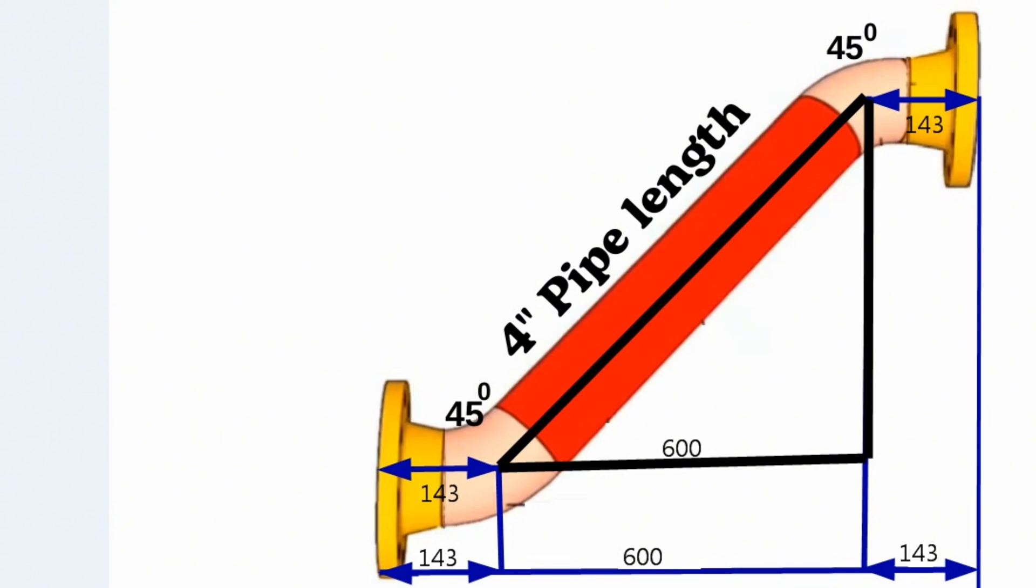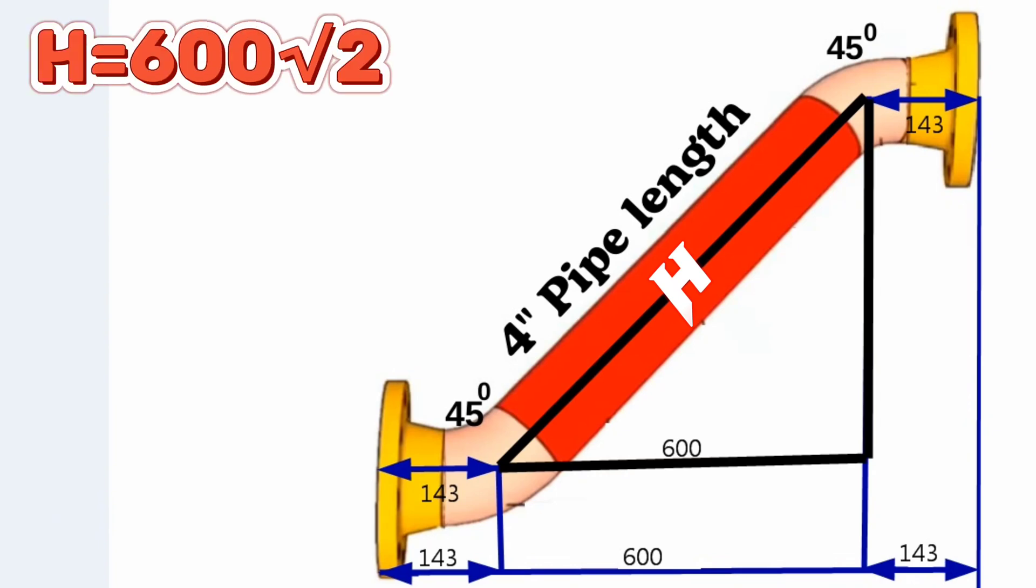To calculate length of hypotenuse, we will use Pythagorean theorem formula. The formula for the hypotenuse of a right triangle is h equals 600 square root 2, where h is the hypotenuse and 600 is the perpendicular sides of our right triangle.